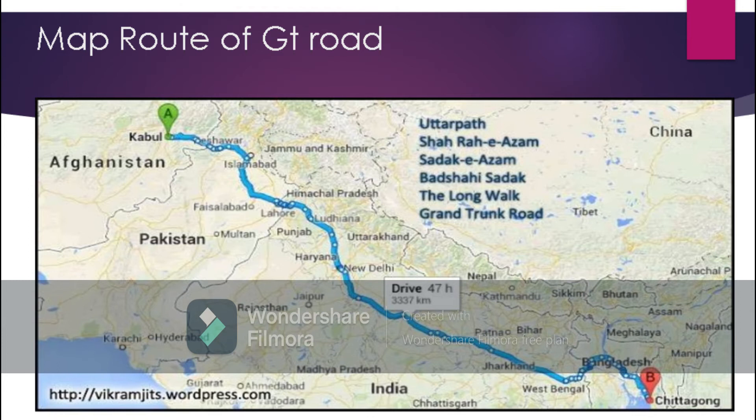Here you can see a map of GT Road. It passes from Chittagong, then through India and its many cities like New Delhi, Haryana, Ludhiana, and Punjab. Then the road starts from Pakistan, passing through Lahore, Faisalabad, Islamabad, and Jammu and Kashmir in Pakistan. It then takes its road to Peshawar, the city of Kabul, and Jalalabad.